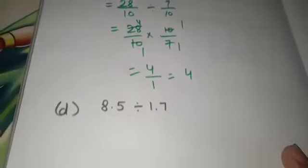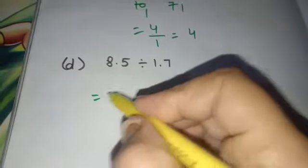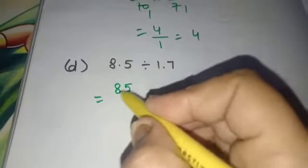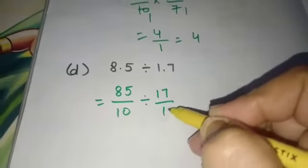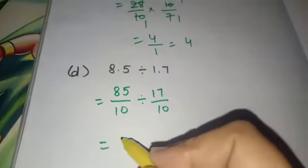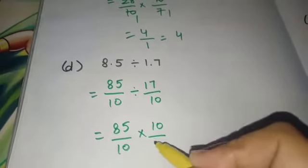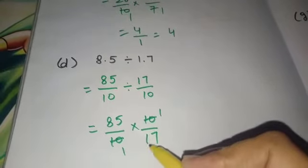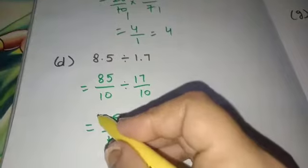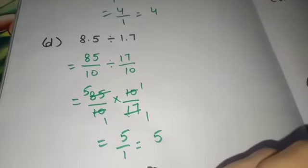Come to the next part, D part. 8.5 divides 1.7. As it will be converted into fraction, 85 by 10 divides 17 by 10. Division sign will be converted to multiply. Then try to cancel. 10 ones are 10, 17 ones are 17, 5 ones are 85. 5 ones are 5, 1 ones are 1. The answer will be 5.